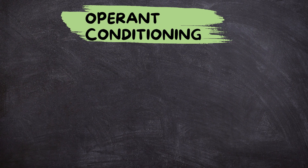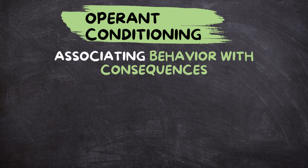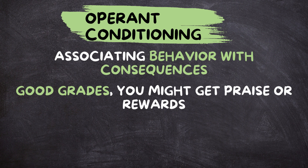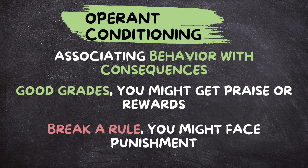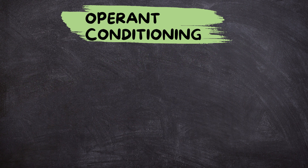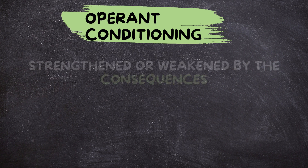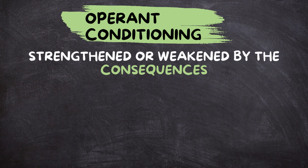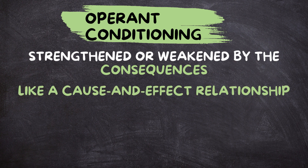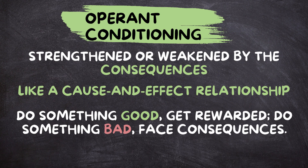How operant conditioning works. Operant conditioning, on the other hand, is about associating behavior with consequences. If you get good grades, you might get praise or rewards. If you break a rule, you might face punishment. This process involves reinforcement and punishment to encourage or discourage certain behaviors. Behaviors are strengthened or weakened by the consequences that follow them — it's a bit like a cause and effect relationship. Do something good, get rewarded. Do something bad, face consequences.